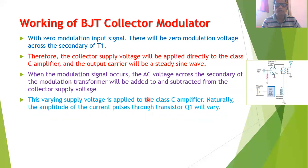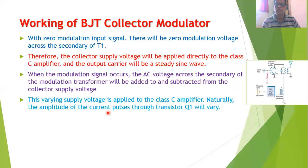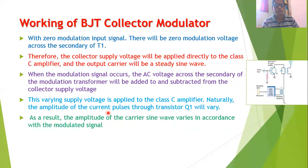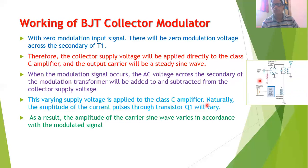The varying voltage applied to the class C amplifier causes the amplitude of the current pulses through transistor Q1 to vary as well. Because the collector potential of Q1 is varying, the amplitude of the carrier sine wave varies in accordance with the modulating signal. Therefore, across the tuned circuit at the output, we get a voltage whose amplitude is continuously varying in accordance with the modulating signal — this is the amplitude modulated output.